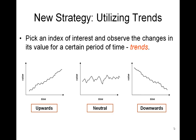The pattern in the middle is the neutral trend, and the pattern towards the right is the downwards trend. The upwards trend means the value is generally increasing over time. Neutral means we can't ascertain any particular direction — sometimes it's going up, sometimes it's going down, with no clear upward or downward movement. Downwards is where the value is decreasing over time.